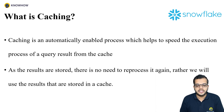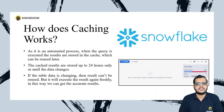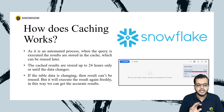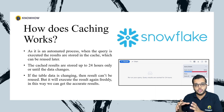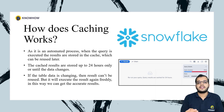How does this caching work? It is an automated process — the query is executed, the results are stored in the cache, and those cached results appear in the output whenever we try to execute it again. The cache results stored in our particular cache storage will be there only up to 24 hours, or until the data changes in our particular warehouse or data.